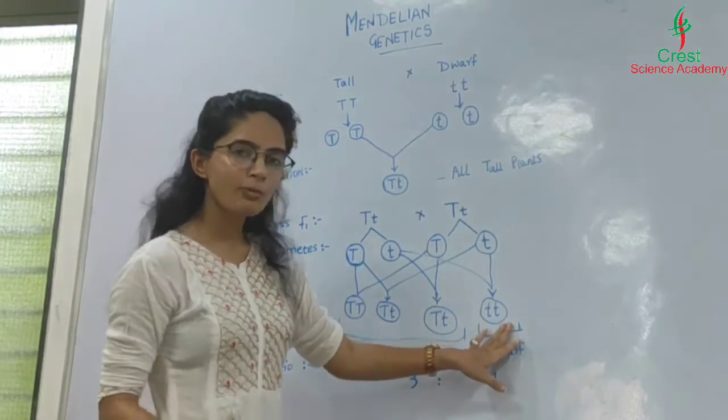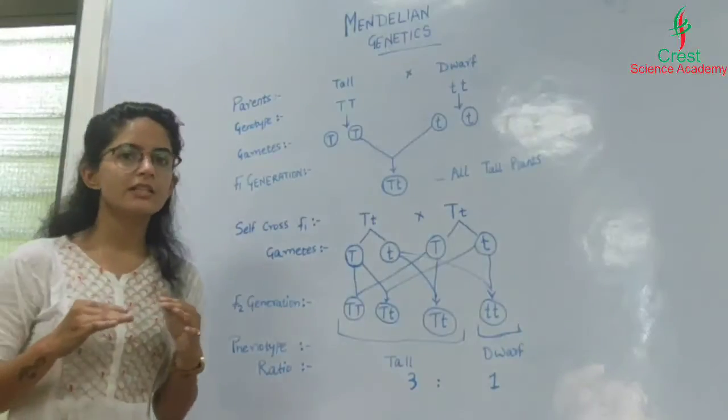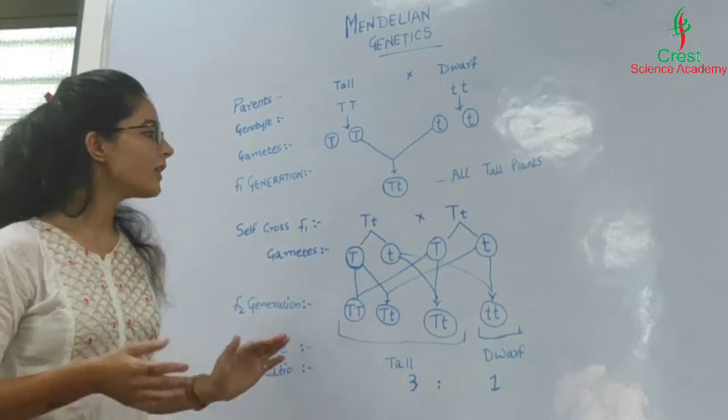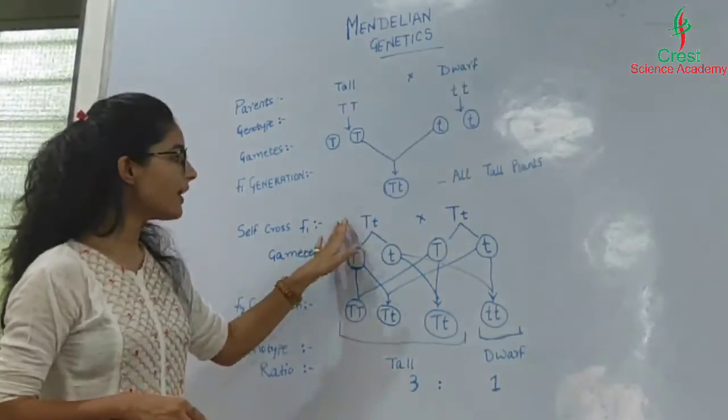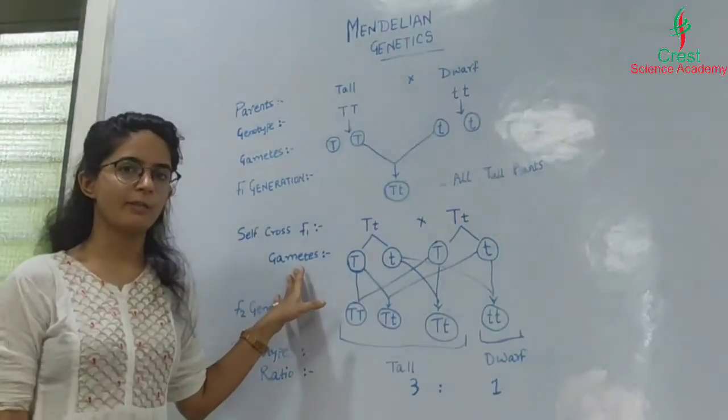The fourth plant was dwarf. He did not obtain any intermediate plants—the stems were either tall or dwarf, no intermediate stem height. Therefore, he concluded that the alleles separated and segregate into different gametes during gamete formation.